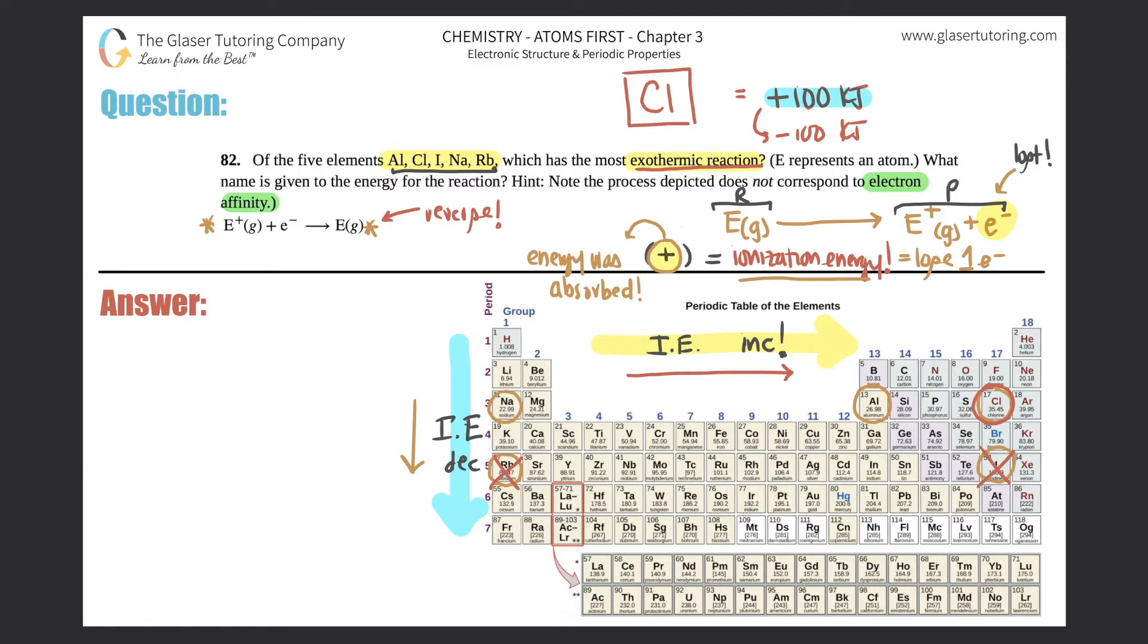Because it has the highest ionization energy. Ionization energy is always positive, endothermic. So on the flip, if you just reverse the reaction, it would also have the most exothermic, the biggest negative number. And that's the case there. Now, they say what name is given to the energy for this reaction? This would basically just be the reverse of ionization energy. Because ionization energy is always losing an electron, this reaction right here is gaining an electron because the electron is on the reactant side. And just know that whenever you gain an electron, it's always exothermic. So there's always going to be that negative in your energy value.